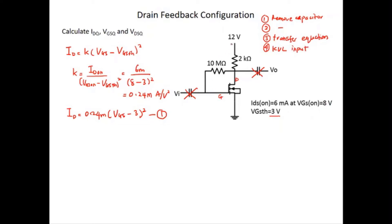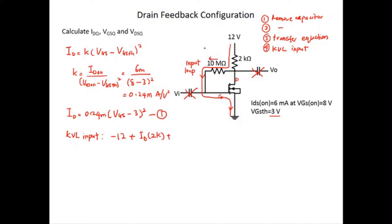Step four is the KVL input loop. For this circuit the loop goes from the 12 V DC source, passes through the 2K resistor, then through the 10 MΩ resistor, and then through the gate and source. The KVL for the input loop is: −12 + ID × 2K + IG × 10MΩ + VGS = 0. However, in a MOSFET the gate current IG is always zero, so the IG × 10MΩ term drops out.